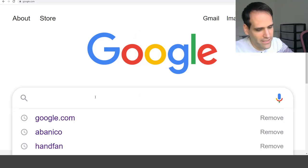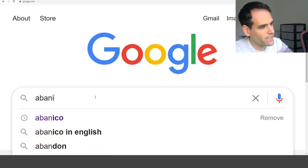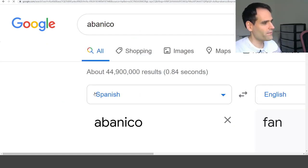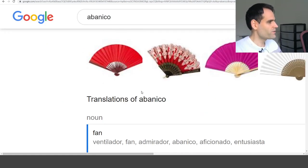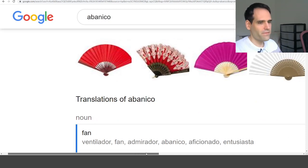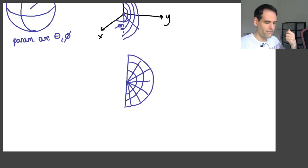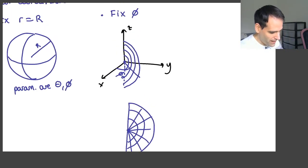Which to me, it reminds me to a abanico, which is something... This is the Spanish word. I think it's called a hand fan. It's typical in Spain. A fan. Which is this thing that you use when it's very hot outside, right? A hand fan. So that's exactly how this looks, like a hand fan. And in fact, if you are doing like this, you would be changing the fixed constant φ around the z-axis.